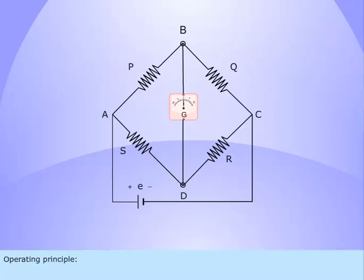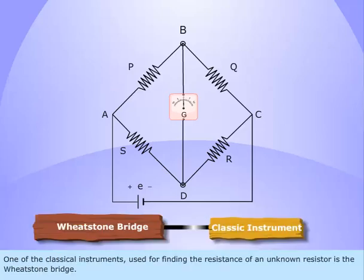Operating principle. One of the classical instruments used for finding the resistance of an unknown resistor is the Wheatstone bridge.